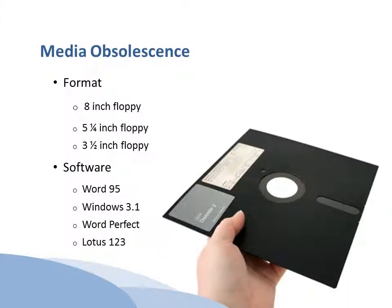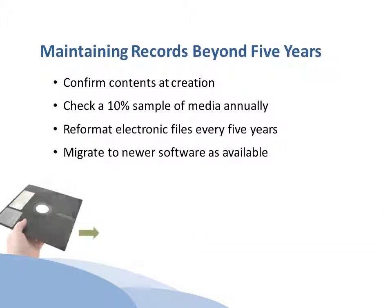Consider the many formats and software now obsolete because of newer technologies — it's incredibly difficult to find a working computer to read your 8-inch floppy disk. It's important that you migrate your electronic records to newer media forms as they are released. To maintain your electronic records beyond 5 years, confirm that files are properly saved when first created. Annually, check 10% of your media storage to ensure you can still access the files. At least every 5 years, reformat your electronic files to the most recent software versions. As newer software comes out, consider migrating to the latest versions to ease headaches later.